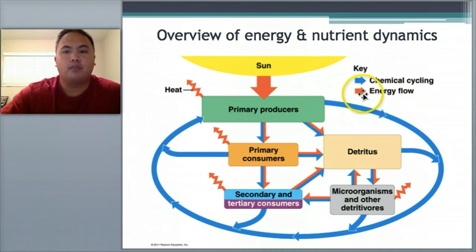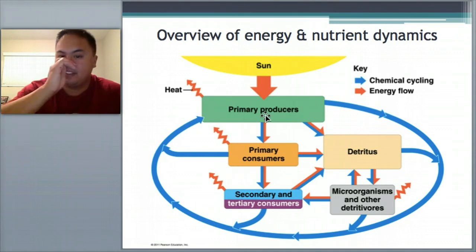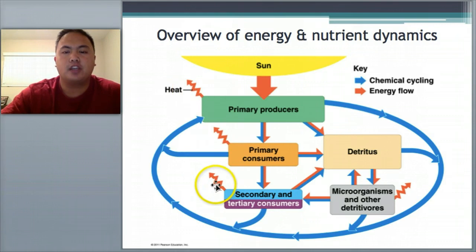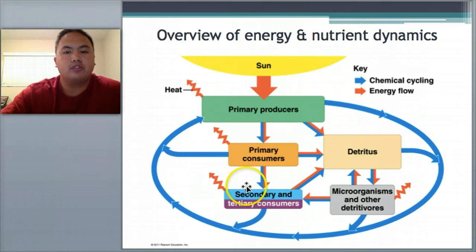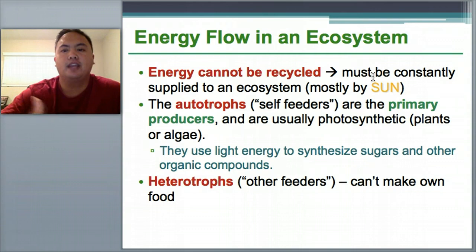That is different from the orange arrow, which represents energy flow. Energy flows one way and doesn't cycle at all. The energy from the Earth all comes from the sun, which goes into primary producers like plants and plankton, then to primary and secondary consumers, but it doesn't cycle back. Each box has a squiggly arrow showing energy lost as heat. Energy cannot be recycled — it has to be constantly supplied by the sun.